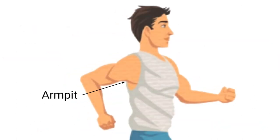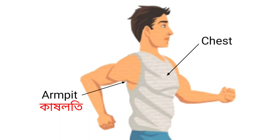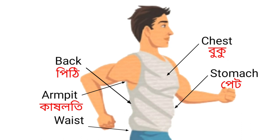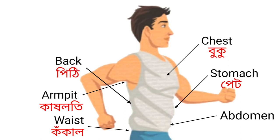Armpit — that means Kakhloti. Chest — that means Buku. Stomach — that means Pet. Back — that means Pithi. Waist — that means Kokal. Abdomen — that means Tolpet.